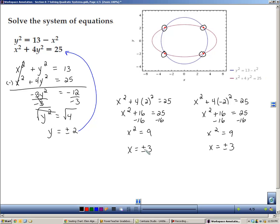So now I'm going to write the solutions. So I'm going to have (-3, 2) and (3, 2). Over here I have (-3, -2) and (3, -2). So these are the four solutions to this system of equations.